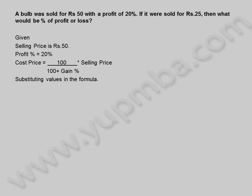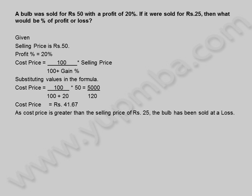Substituting values in the formula: cost price is equal to 100 divided by (100 plus 20) into 50, which equals 5000 by 120. Cost price is equal to 41.67 rupees. As cost price is greater than the selling price of 25 rupees, the bulb has been sold at a loss. Loss is equal to cost price minus selling price.